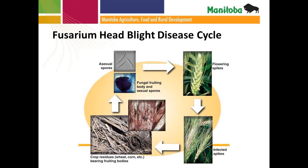Moving to a quick overview of the fusarium head blight disease cycle — this graphic is from North Dakota State University's Department of Plant Pathology. Fusarium head blight fungi overwinter on infected crop residue or on seed. Spores are then formed from fruiting structures on the crop residue, and those spores can spread by rain or by wind. When the crop is flowering, if other conditions are met, infection can occur, and that's when we start to see symptoms appear within the crop.